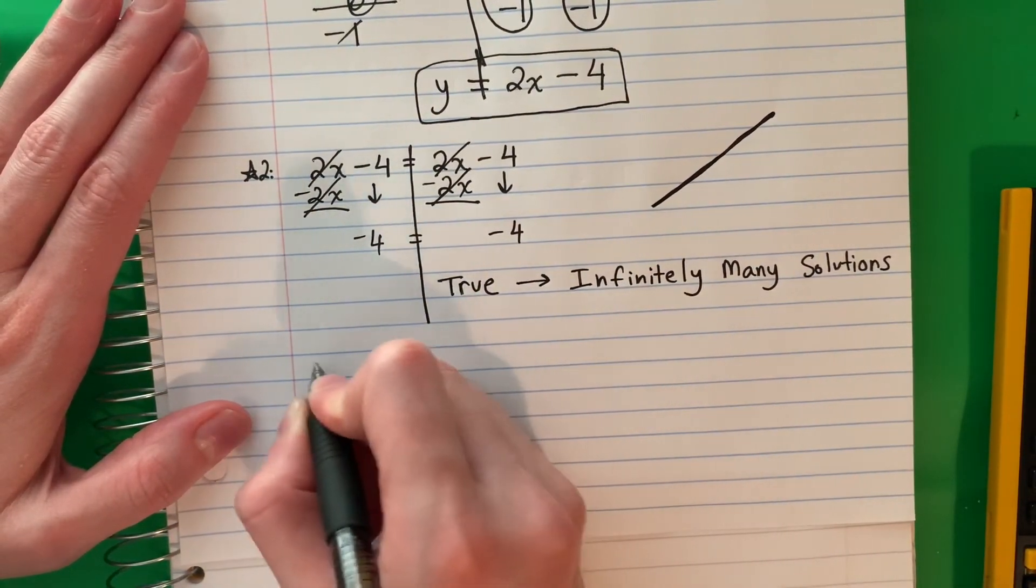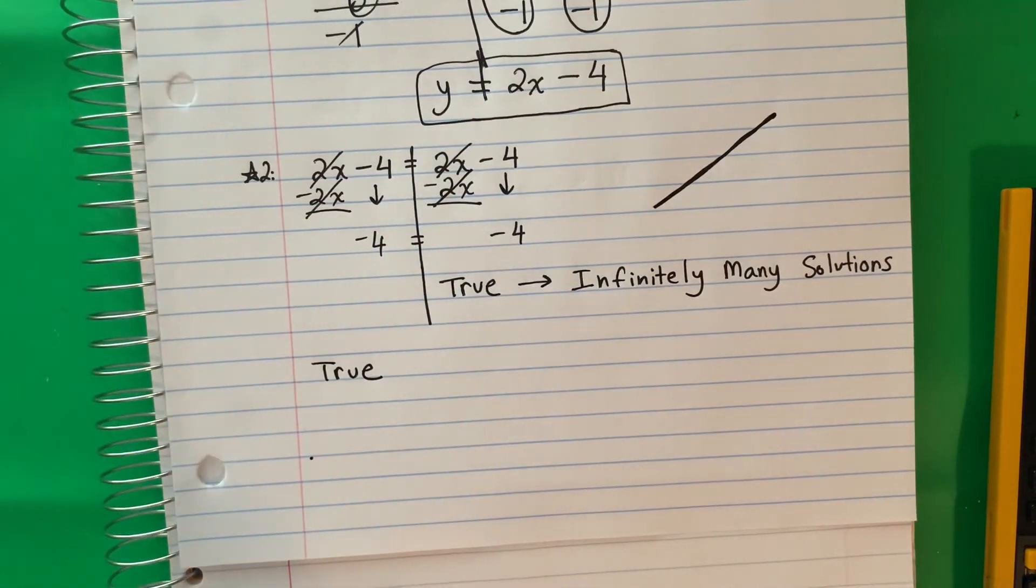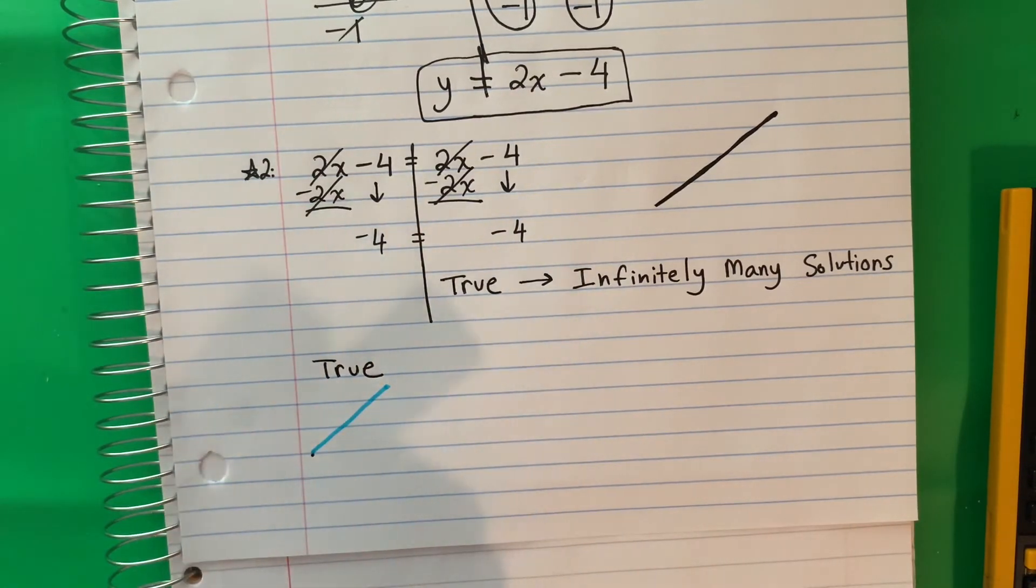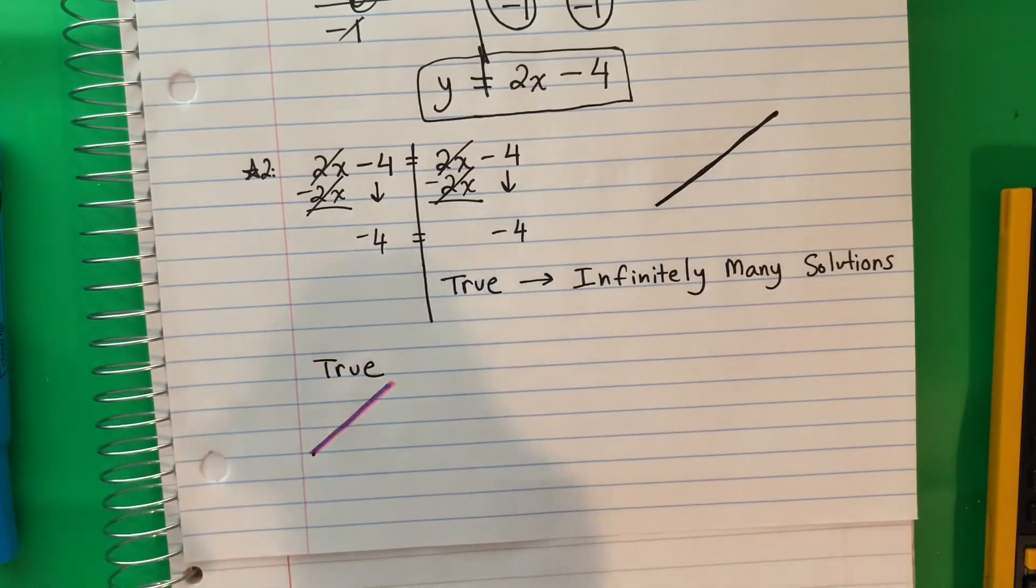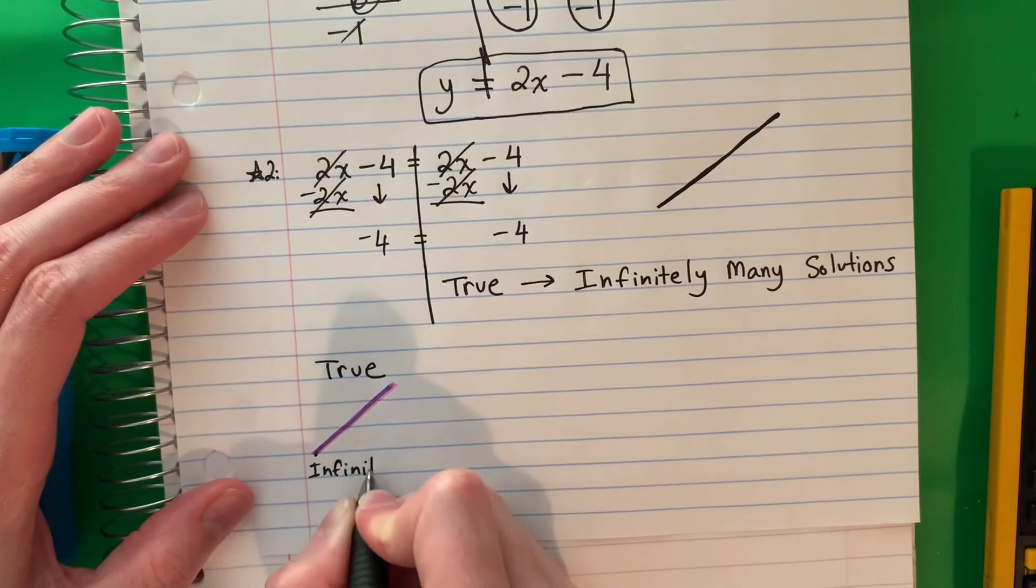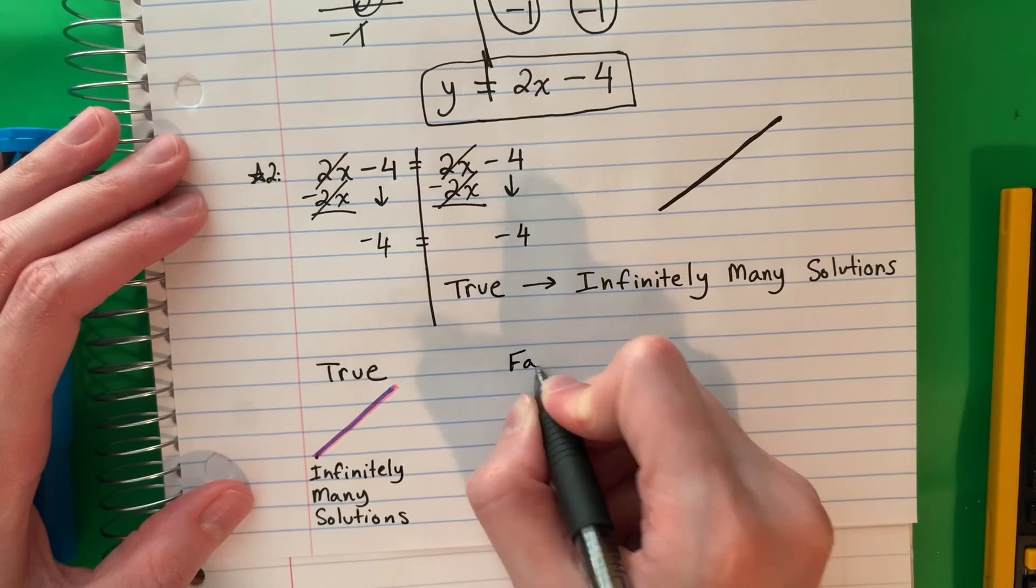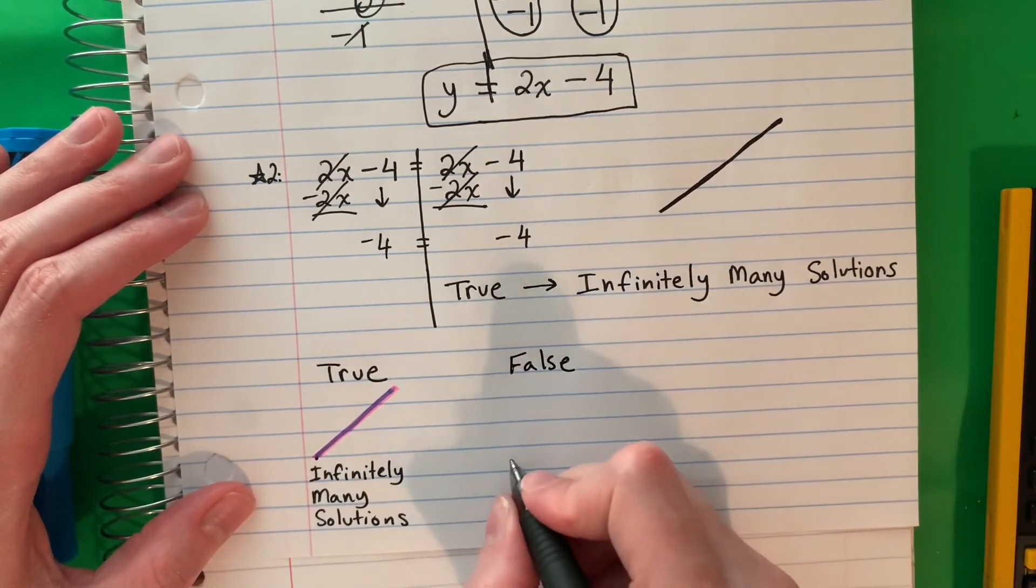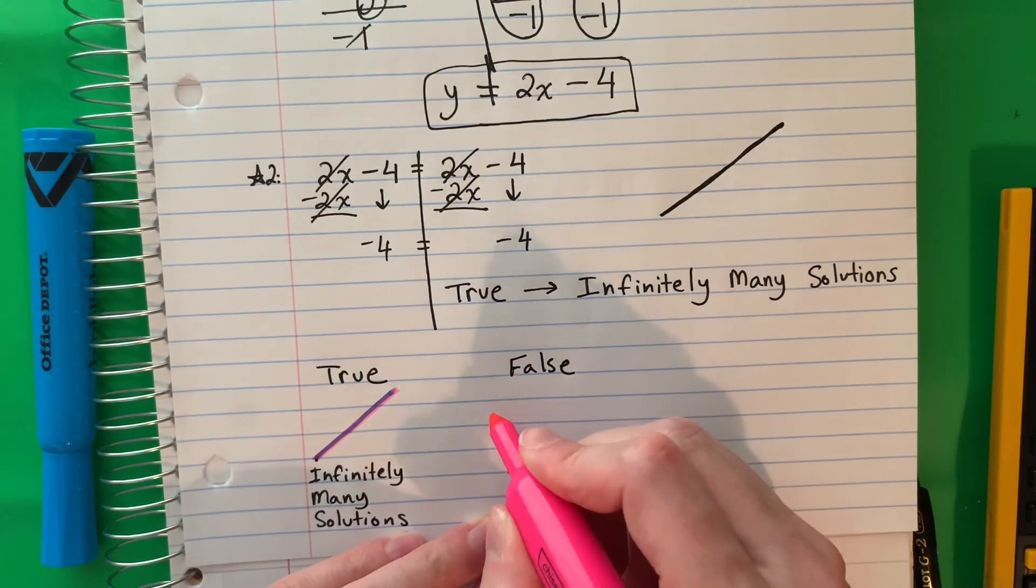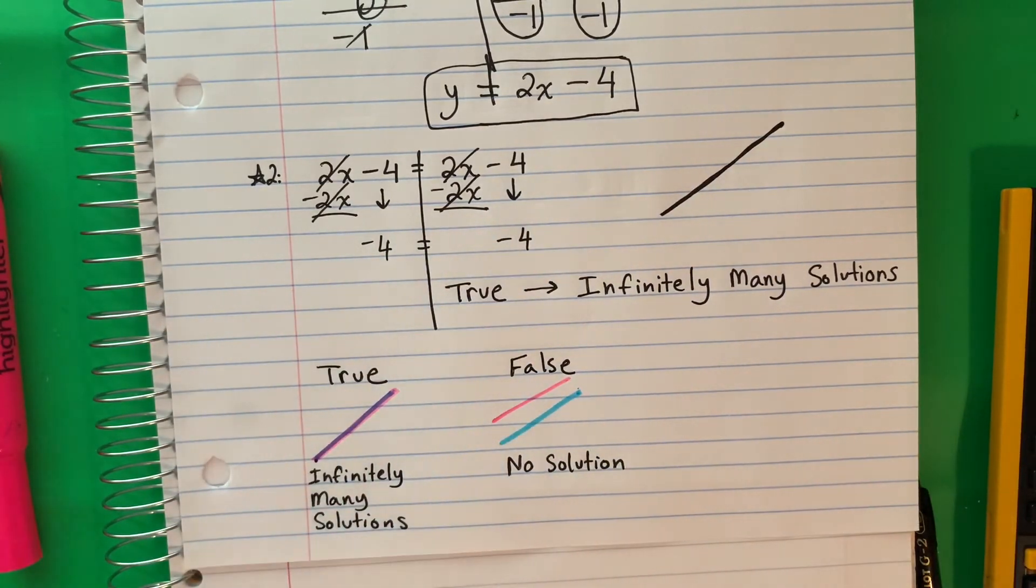So let me show you a few things. If you have true, your graph will look like this. It will be one line with another line on top in the same place. So if it's true, it's infinitely many solutions. If it's false, remember it was no solution. And that means the lines never touch. They're going to be parallel. If they don't touch, there's no solution. The touch is where the solution is.